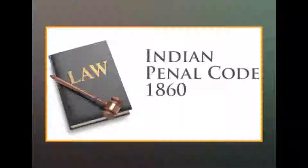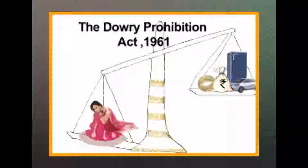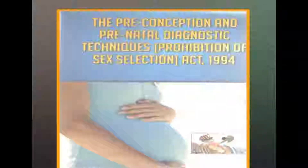Domestic violence is not a new concept. It has been recognized as a civil wrong as well as a crime under a number of laws enacted by the state. The relevant laws are plenty. The criminal laws which deal with domestic violence include the Indian Penal Code 1860, the Criminal Procedure Code 1973, the Dowry Prohibition Act 1961, the Commission of Sati Prevention Act 1987, and the Preconception and Prenatal Diagnostic Techniques (Prohibition of Sex Selection) Act 1994. All these enactments create and recognize punishable offences for various kinds of violence against women.